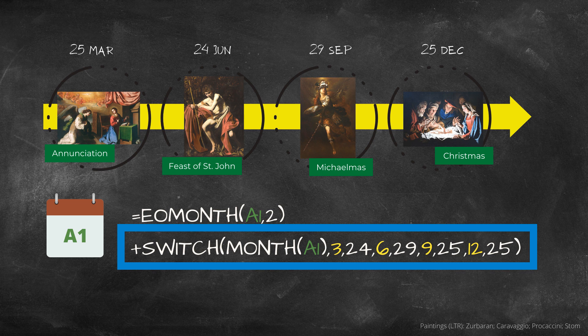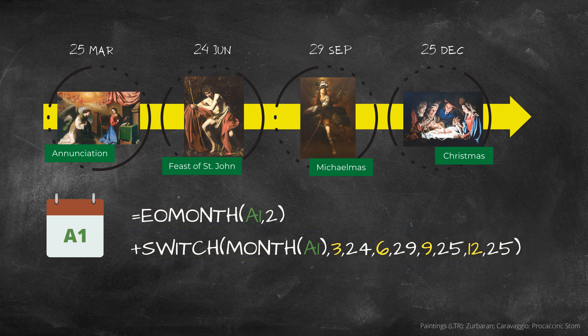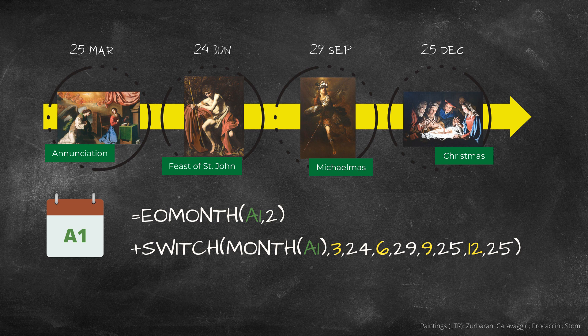This will help us add the right number of days to take us to exactly the right date in June. You know how many days you need because you know the month of the previous date. If the month of the previous date is three, you know that you need the June quarter day, and therefore the number of days you need is 24.